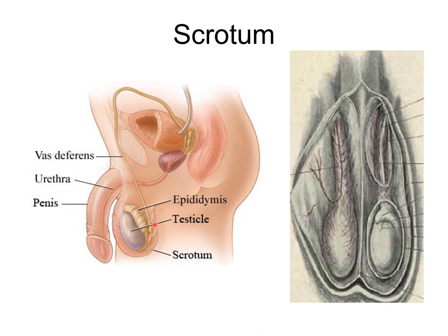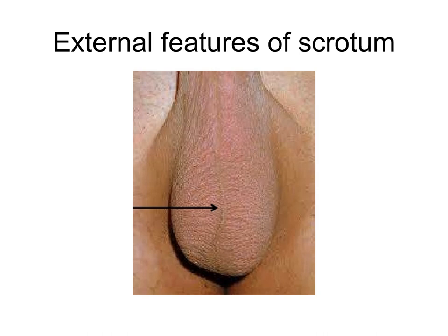The scrotum is an outpouching of the lower part of the anterior abdominal wall and contains the testis, epididymis, and lower part of the spermatic cord. The scrotum is divided into right and left halves by a median ridge or raphe, which extends anteriorly onto the undersurface of the penis and posteriorly up to the anus. The skin is highly corrugated due to the presence of the subcutaneous dartos muscle, and is comparatively darker. The left half of the scrotum is slightly lower than the right because the left spermatic cord is longer.